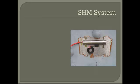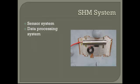First, we're going to talk about the sensor system. This is a picture of one of the sensors. There are different types of sensors that can be used. You can monitor strain, stress, temperature, deflection, and movement. All of the data that you collect through the sensors goes back through a data processing system.